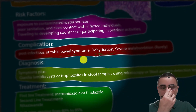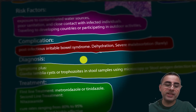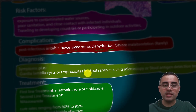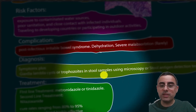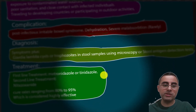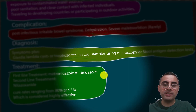Diagnosis is based on symptoms along with detection of Giardia lamblia cysts or trophozoites in the stool. Direct visualization using a microscope or stool antigen detection tests are commonly used. First-line treatment is metronidazole or tinidazole.